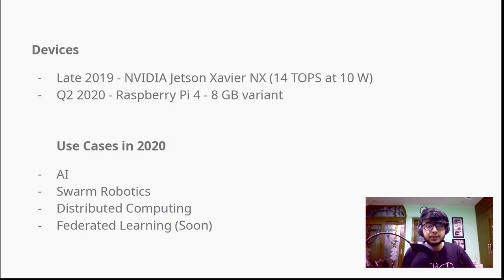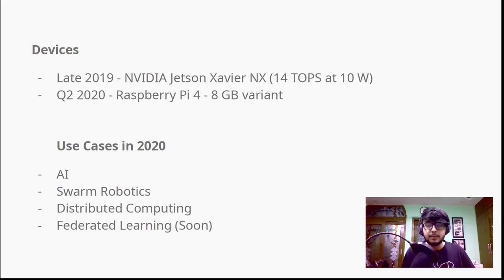Let's talk about how they have evolved over the years. In late 2019, we had the Nvidia Jetson Xavier launched, which does 14 tera operations per second at only 10 watts. To put that into perspective, 30 or 40 years ago a computer of that much capacity wouldn't have been able to fit in your desk, and the Nvidia Jetson Xavier is smaller than a usual credit card. In the second quarter of 2020, the Raspberry Pi 4 8 GB variant was launched — 8 GB of RAM on a device that fits in the palm of your hand is really amazing.